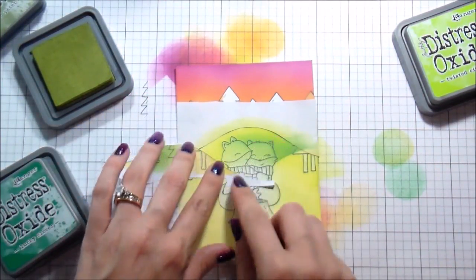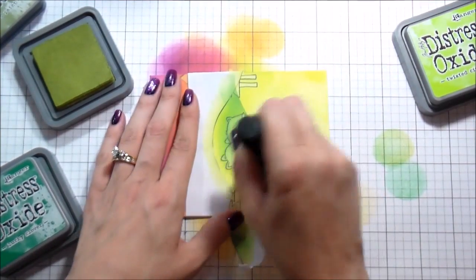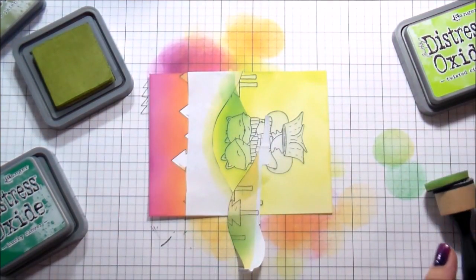And this will again increase that look of depth that we're trying to get. Now it kind of looks funny right now, but when we do the other side, so that there's two hills and I'm doing the same exact thing.